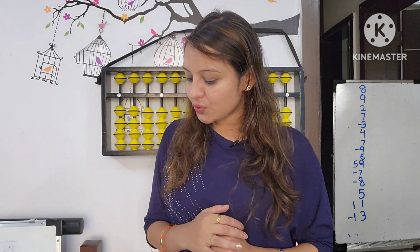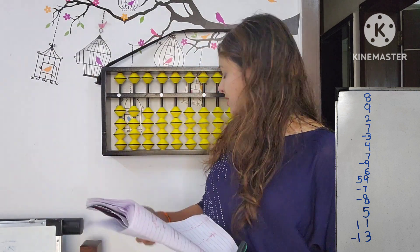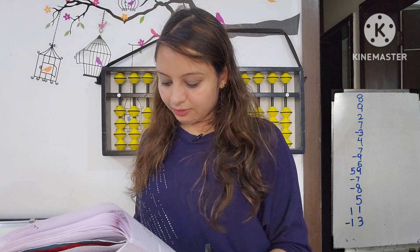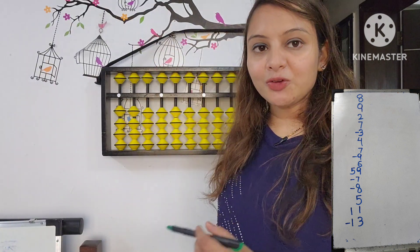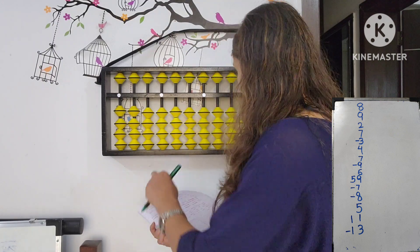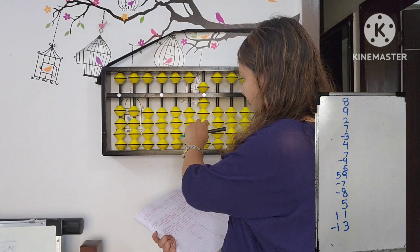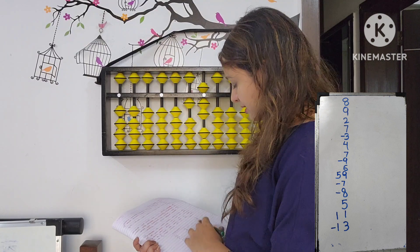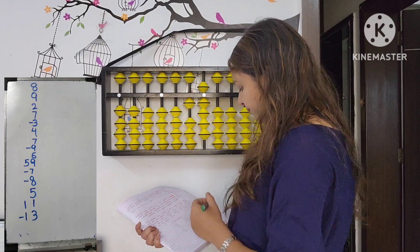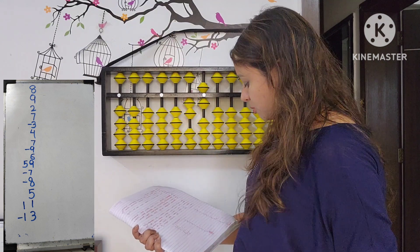We are going to solve this sum on abacus. First: 8 — simple. Then 9 — big friend formula: less 1, add 10. Then 2 — simple. Then 7, less 3: add 10 — big friend formula.